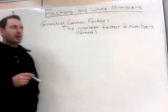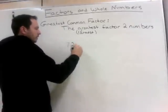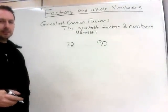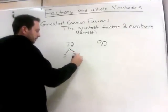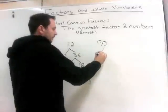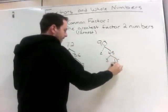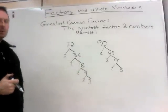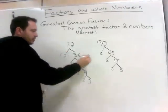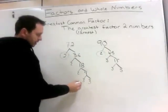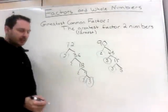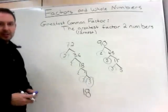Now try this for yourself with numbers 72 and 90. Go ahead, hit pause, try this, and then rejoin me. Hopefully you came up with these factor trees. What do they share in common? They share two 2's and two pairs of 3's in common. So 2 times 3 times 3 is 18. The greatest common factor these two numbers have is 18.